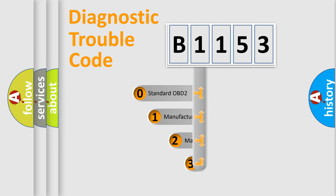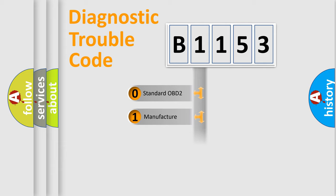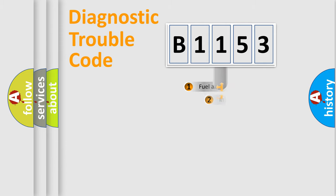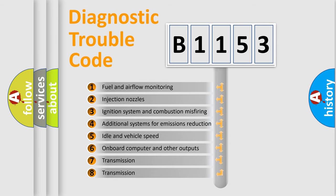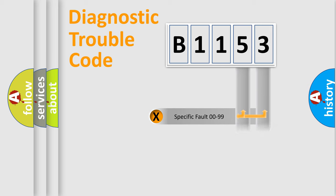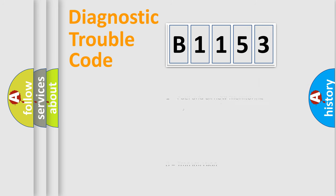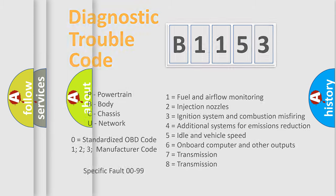This distribution is defined in the first character of the code. If the second character is expressed as zero, it is a standardized error. In the case of numbers 1, 2, or 3, it is a manufacturer-specific error. The third character specifies a subset of errors, and this distribution is valid only for the standardized DTC code. Only the last two characters define the specific fault of the group.